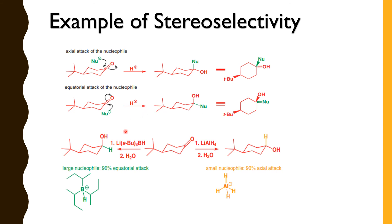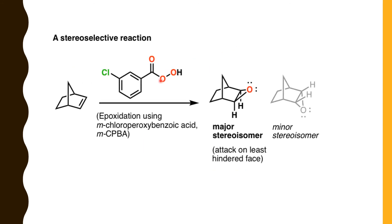To repeat: when there is a large nucleophile, the equatorial attack product is the major product; when there is a small nucleophile, the axial product is the major product. Various reasons include steric hindrance. Another example of a stereoselective reaction is epoxidation: the major stereoisomer is formed by attack on the sterically less hindered face, giving the major product, while attack on the other face gives the minor product. Both products are stereoisomers of each other, so this is a stereoselective reaction.